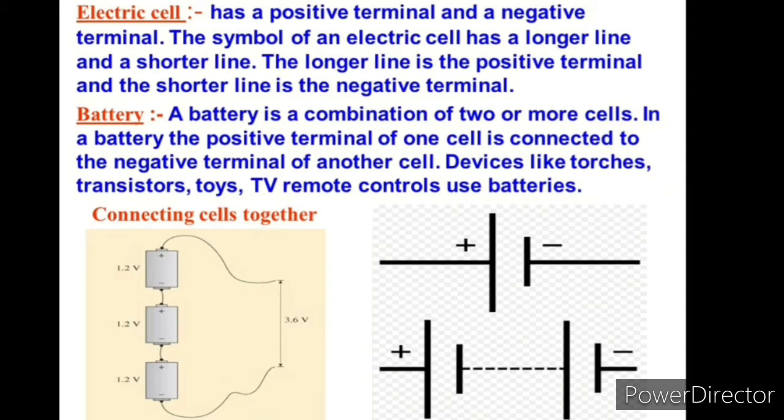Now come to the battery. A battery is a combination of two or more cells. In a battery, the positive terminal of one cell is connected to the negative terminal of another cell. Devices like torches, transistors, toys, TV remote controls use batteries.